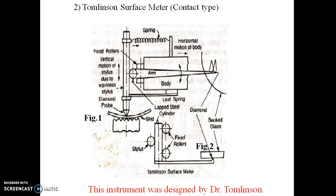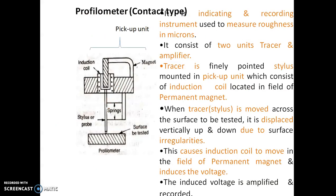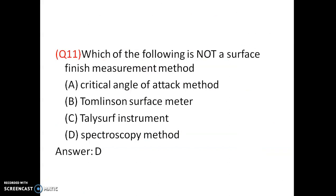The question asks which of the following is not a direct surface roughness measurement instrument. The Tomlinson surface meter, Taylor Hobson TallySurf, and profilometer are all surface roughness measurement devices. A wireless surface dynamometer is used to measure torque, so the answer is C. For the next question — which is not a surface finish measurement method — spectroscopy is not a surface roughness measurement method, so the answer is D.